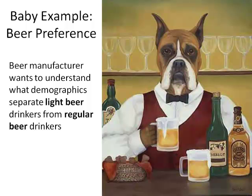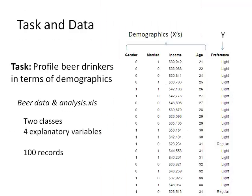Remember the example with the online bartender who wants to pour the right beer — light beer or regular beer — based on estimating your age and gender as you walk in. Let's keep that in mind and use that little example to highlight the difference from other methods we've seen, and then we'll also look at a bigger example.